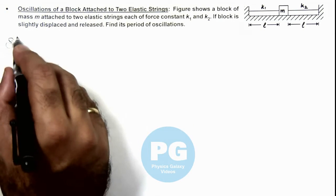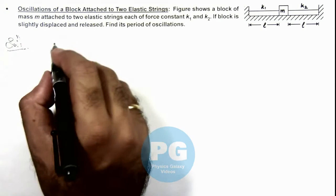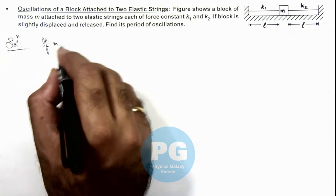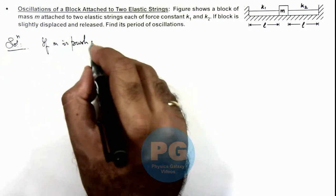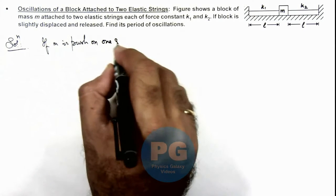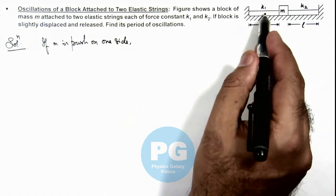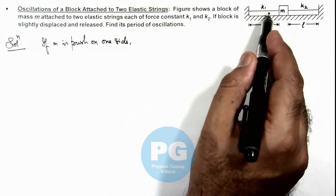In this situation, we can see if m is pushed on one side, if it is pushed toward left, then the left string will get slack.